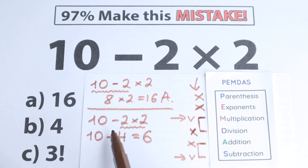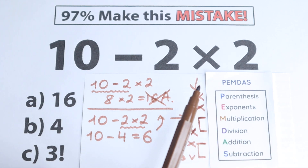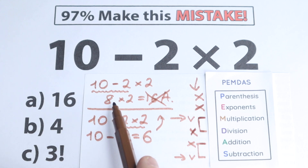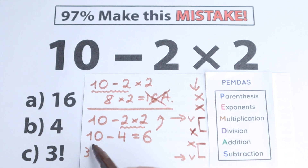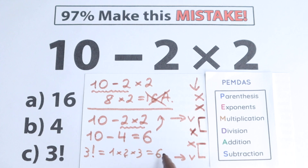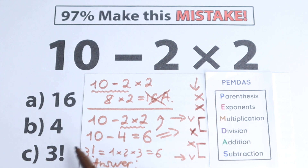We've solved this using PEMDAS, but one really important point — you need to know the key rule: multiplication and division come before addition and subtraction. The correct answer is 6. But looking at the options, we don't see 6 listed directly. A lot of students solve it correctly but then go back to 16, which is absolutely the wrong answer. Option A is not 6, option B is not 6, but option C is 3 factorial. Let's remember: 3 factorial is the product from 1 to 3 — 1 times 2 is 2, times 3 is 6. So 3 factorial equals 6, and our answer is option C.